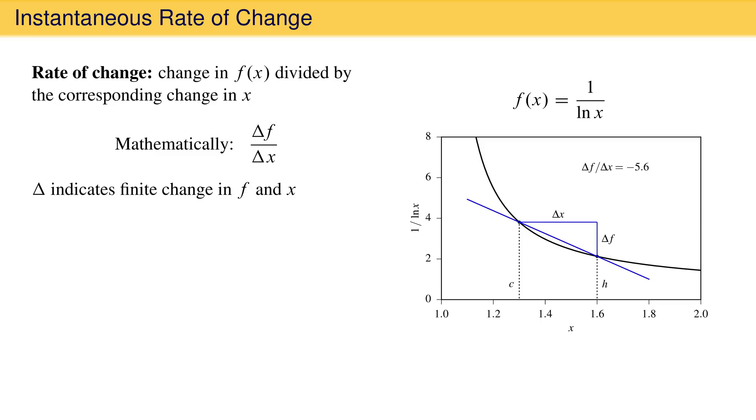Now let's compare this rate of change to the slope of the straight line tangent to the function at point c. We already know that the slope of this line is the derivative of the function at point c, and that the value at c equal to 1.3 is negative 11.2. Notice that the rate of change over the interval delta x is not the same as the derivative at point c.